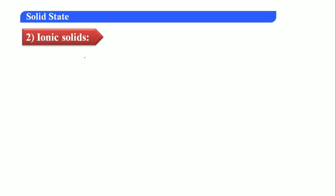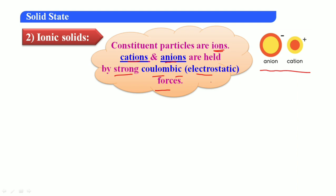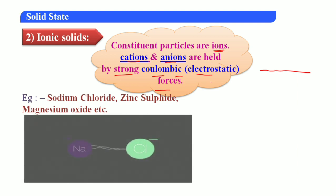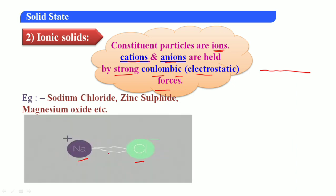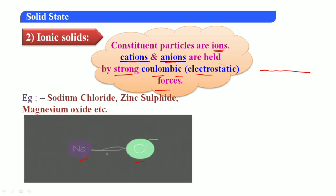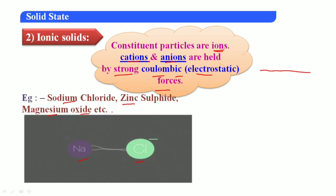Second type: ionic solids. In ionic solids, the constituent particles are ions — not molecules. Both cations and anions are present, held together by strong Coulombic force of attraction, which is the electrostatic force of attraction between positive and negative ions. Examples include sodium chloride (NaCl), zinc sulfide (ZnS), and magnesium oxide (MgO).